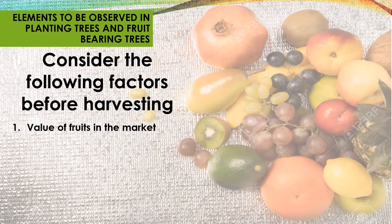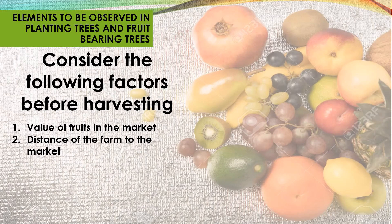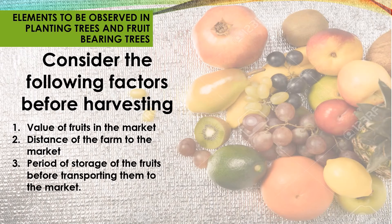Number two: distance of the farm to the market — how long is the journey from the farm to the market? Number three: the period of storage of the fruits before transporting them to the market. Be careful not to store them too long — by the time they reach the market, they might already be overripe.